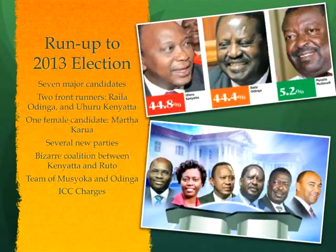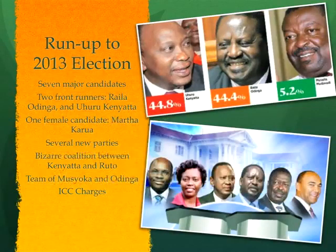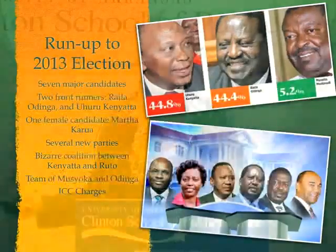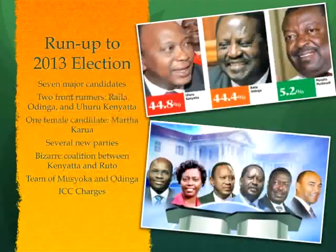Mutavati is a Luhya — a very important swing group in this election. There was also a woman running, Martha Karua — a terrific anti-corruption candidate, very educated, a lawyer and a former member of parliament. Peter Kenneth was also a terrific anti-corruption candidate who has done an amazing job developing his constituency and demonstrating what good development can do.